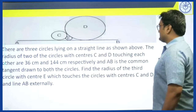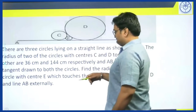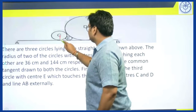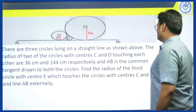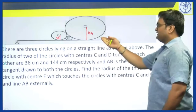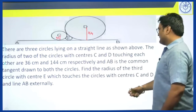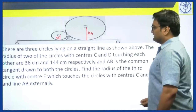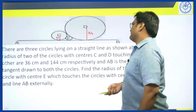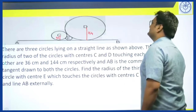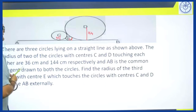The radius of the two circles with centres C and D, which are touching each other, are 36 centimetres and 144 centimetres respectively. AB is a common tangent drawn to both circles — and indeed it is a common tangent to all three circles as they lie on line AB. Find the radius of the third circle with centre E, the small circle here, which touches the circles with centres C and D and line AB externally. So let us say this radius is r. How can we find r?